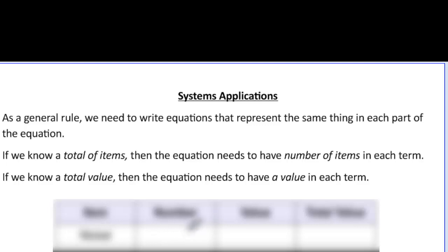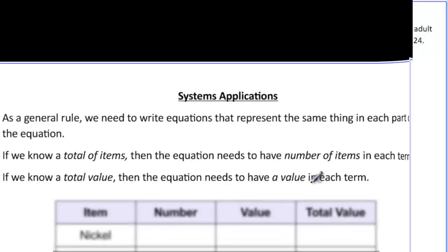If we know total number of items, then the equation needs to have the number of items in each term. If we know total value, then the equation needs to have a value in each term.